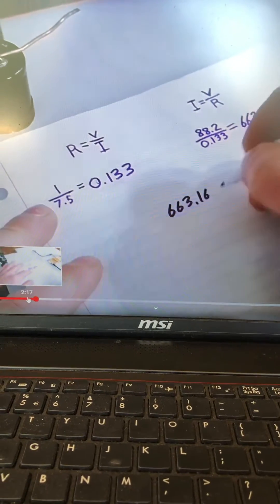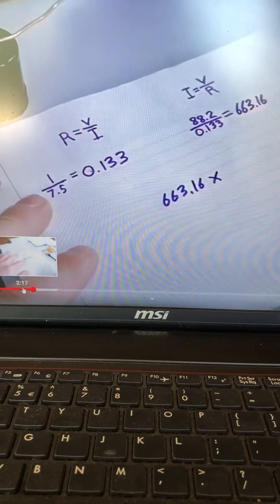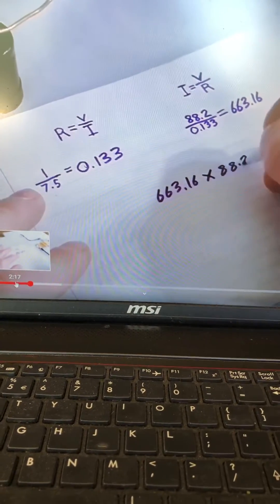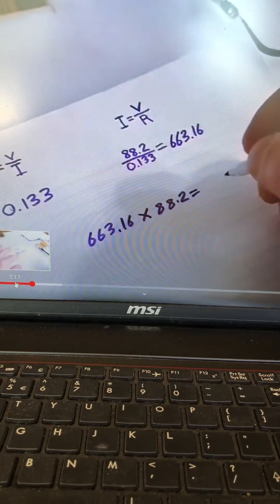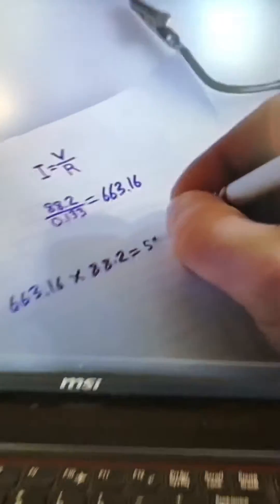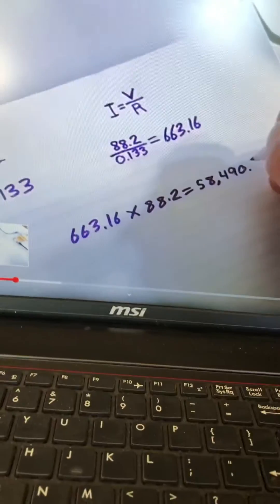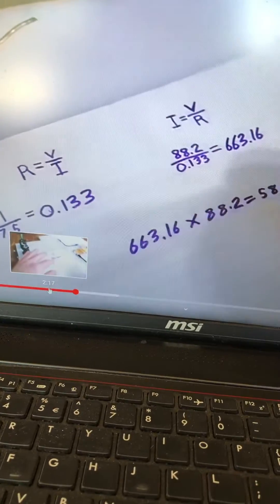Multiply that by the voltage per pulse - 58 kilowatts from 88 volts.